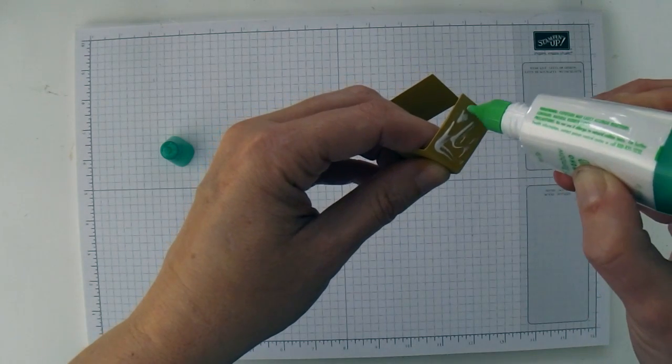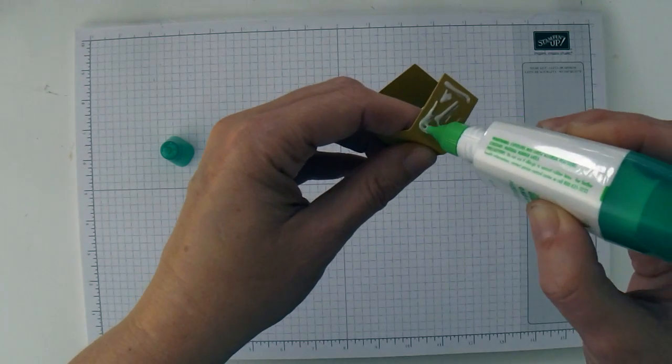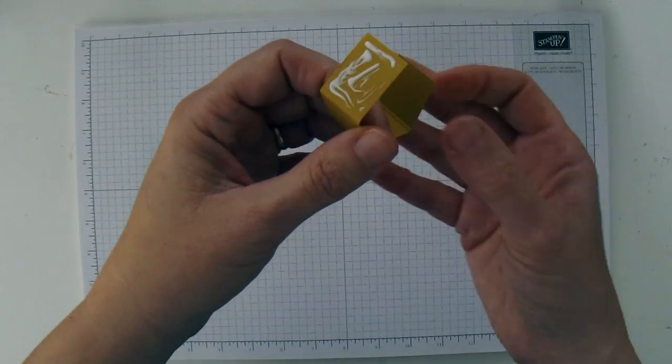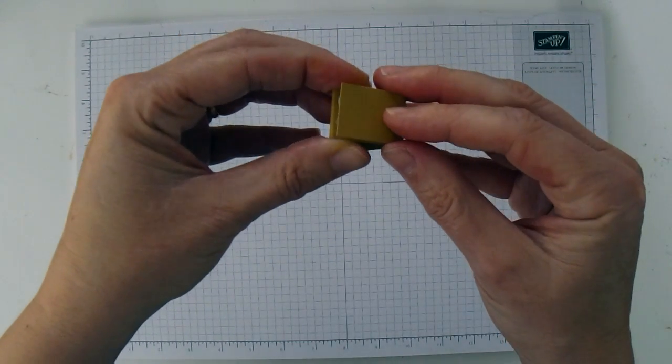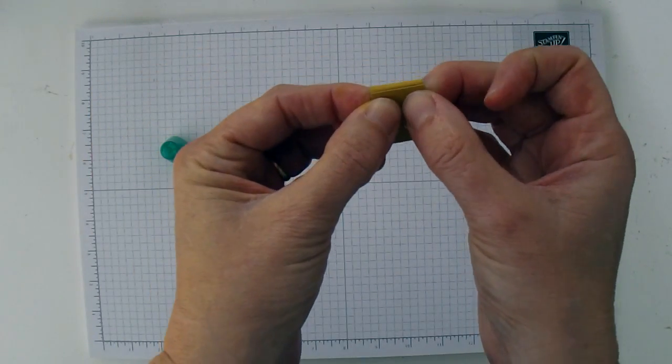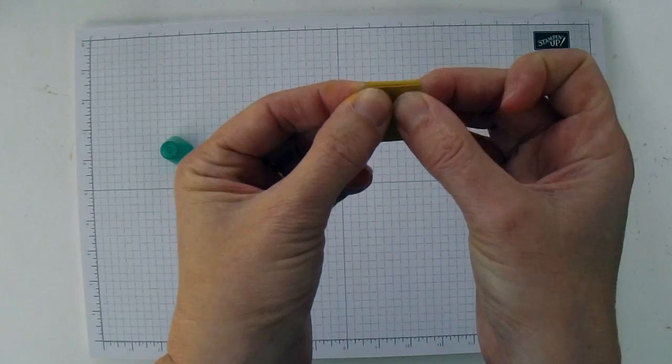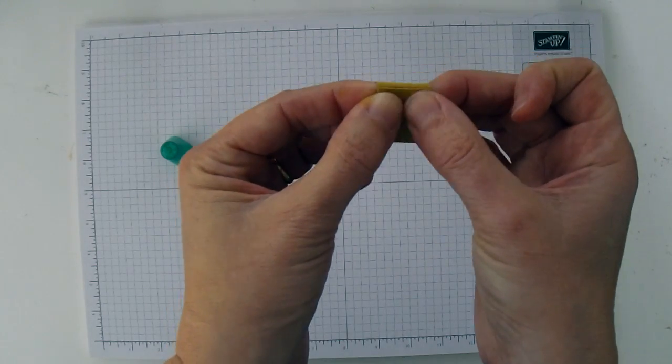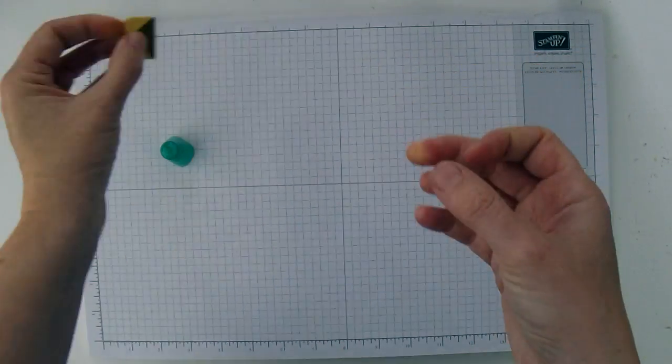I'm going to make sure that I, in particular, go all the way around the edge. Make sure I have a good seal. And then I'm just going to hold this for a few seconds to make sure the glue and the cardstock are meshing. And then you can set that aside.